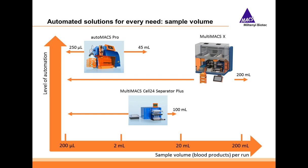Moving on to a different comparison — sample volume rather than throughput. Starting on the left with 200 microliters, moving up to 200 milliliters on the right: the AutoMACS Pro can separate from 250 microliters to 45 milliliters of blood products. The MultiMACS product family can be used for small volumes, but because we have the column block and parallel cell separation, we can go to much higher volumes. The MultiMACS Cell 24 Separator goes up to about 100 milliliters, and the MultiMACS X with fully automated cell processing can handle 200 milliliters with minimal hands-on work.